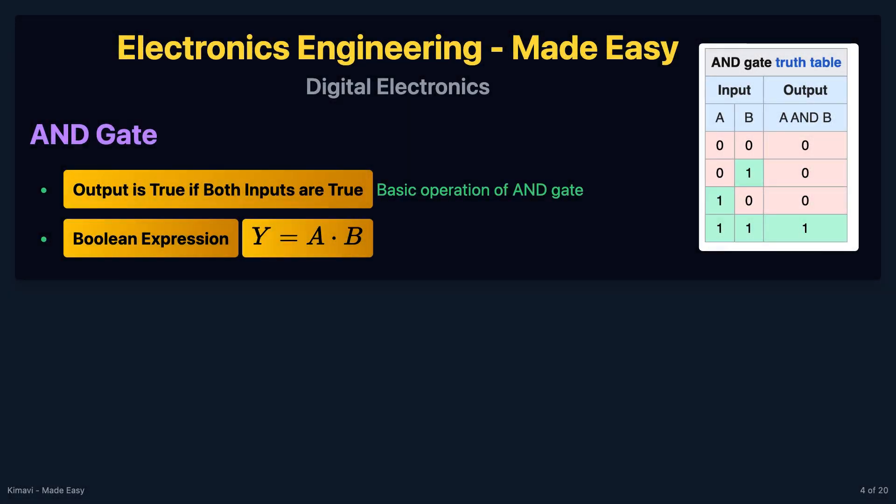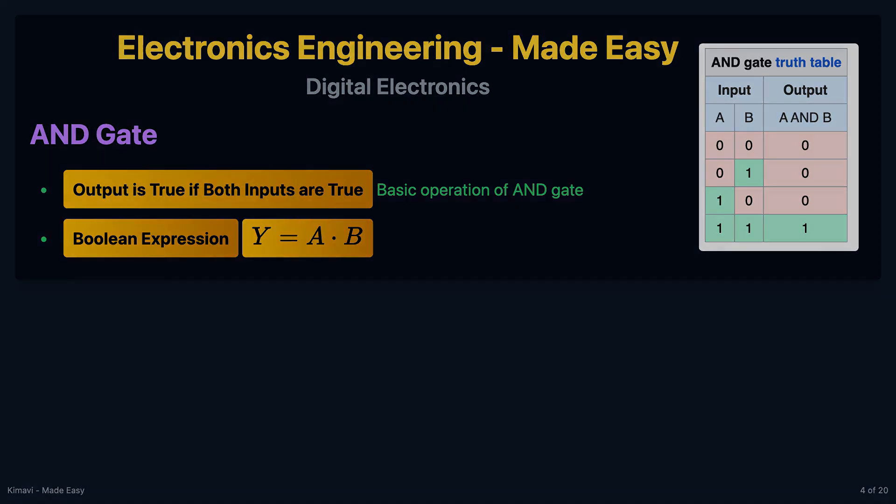The AND gate outputs true only if both inputs are true. The boolean expression for an AND gate is y = a · b, where the dot represents the AND operation.